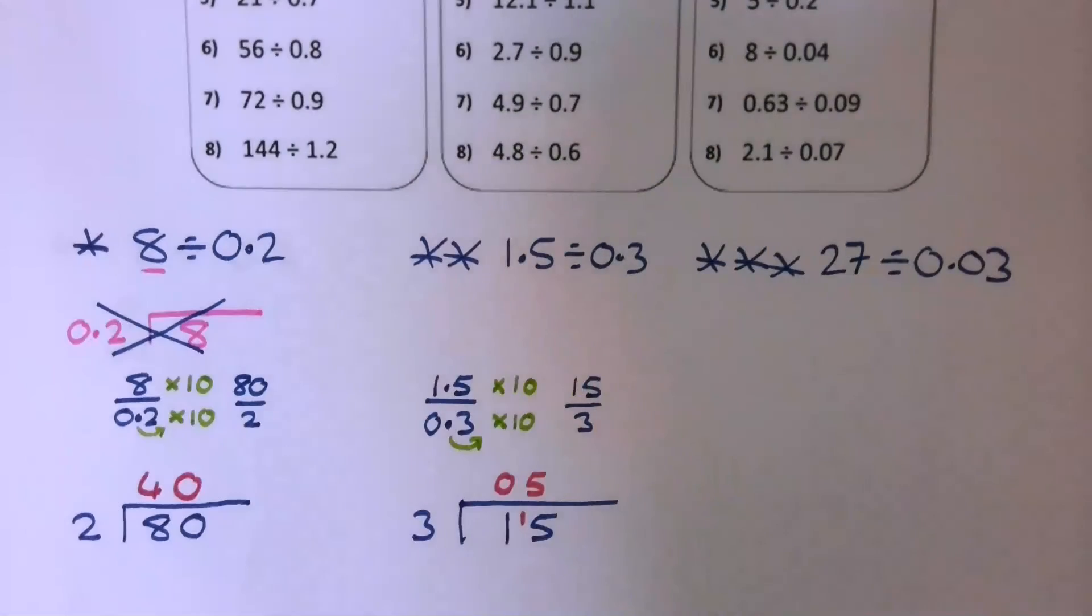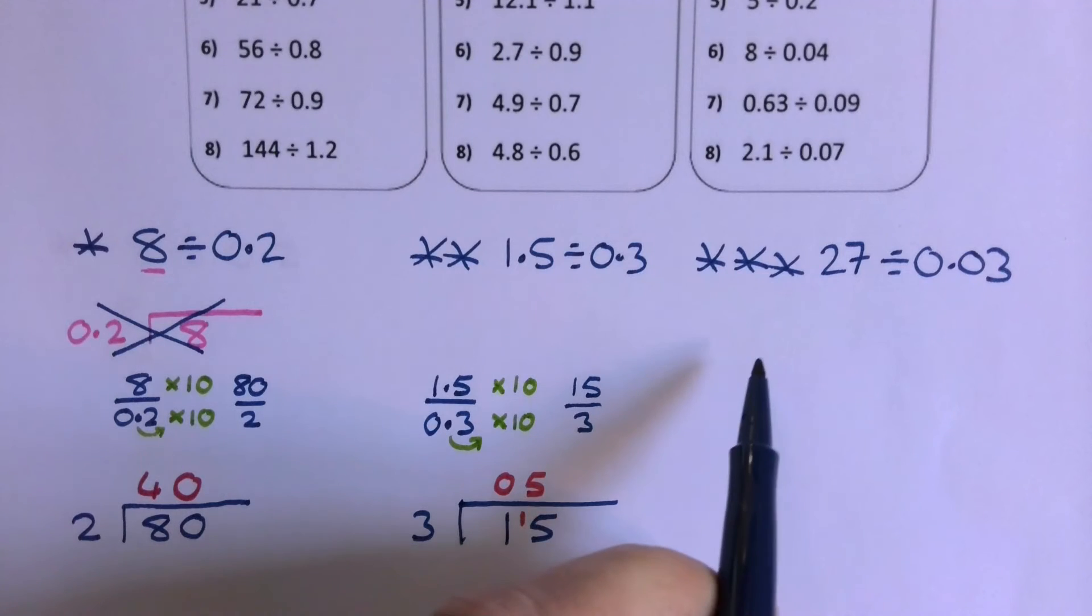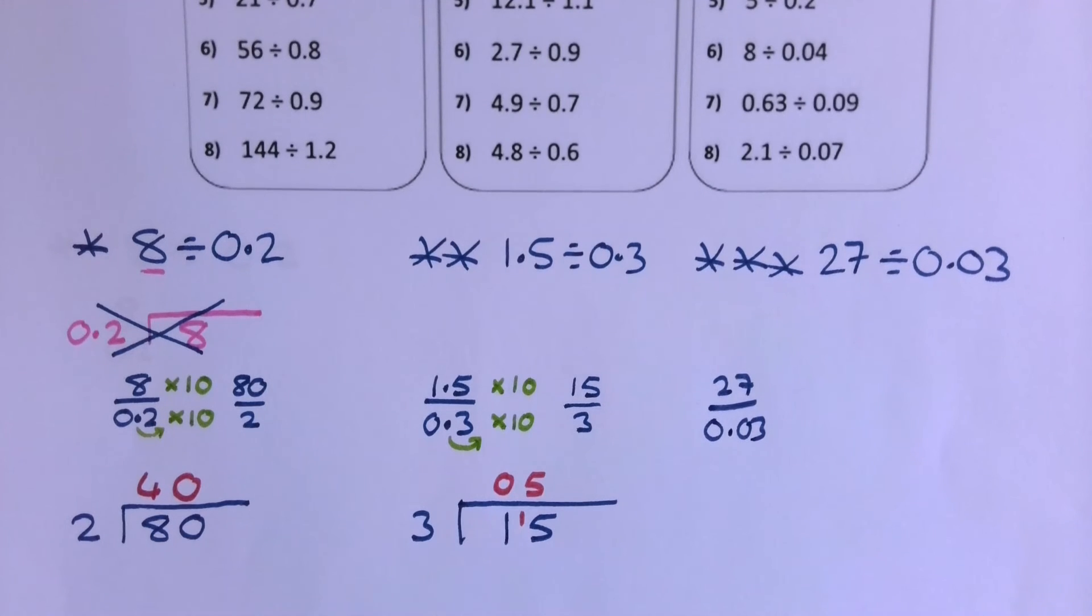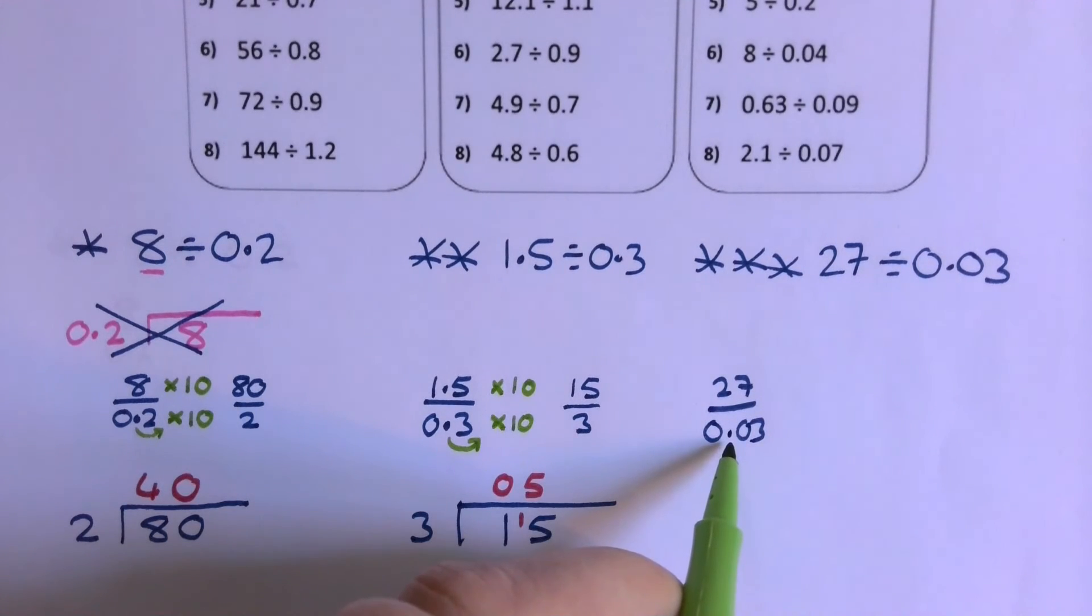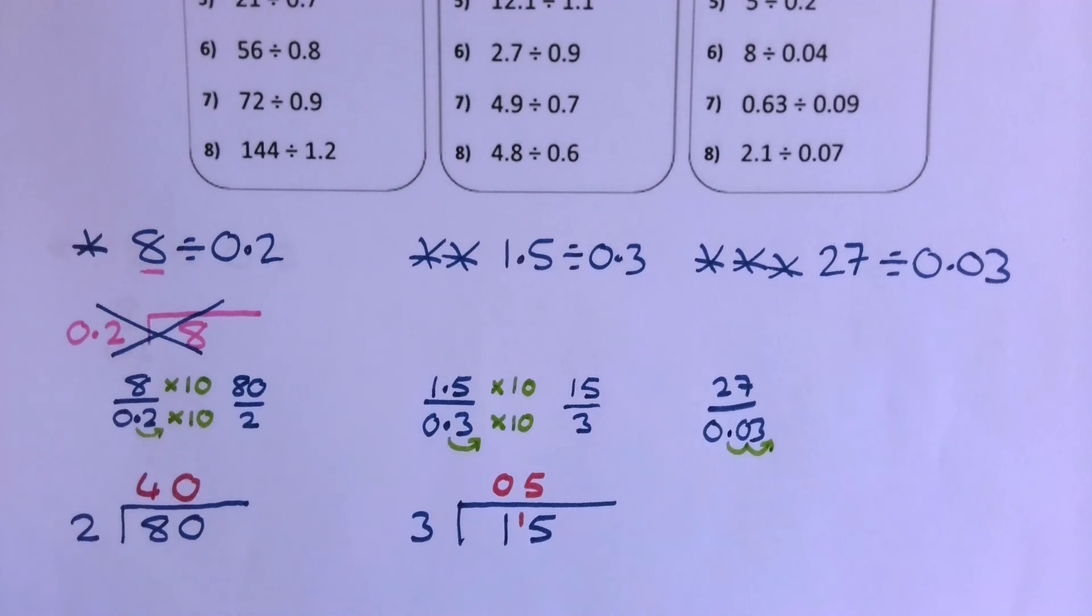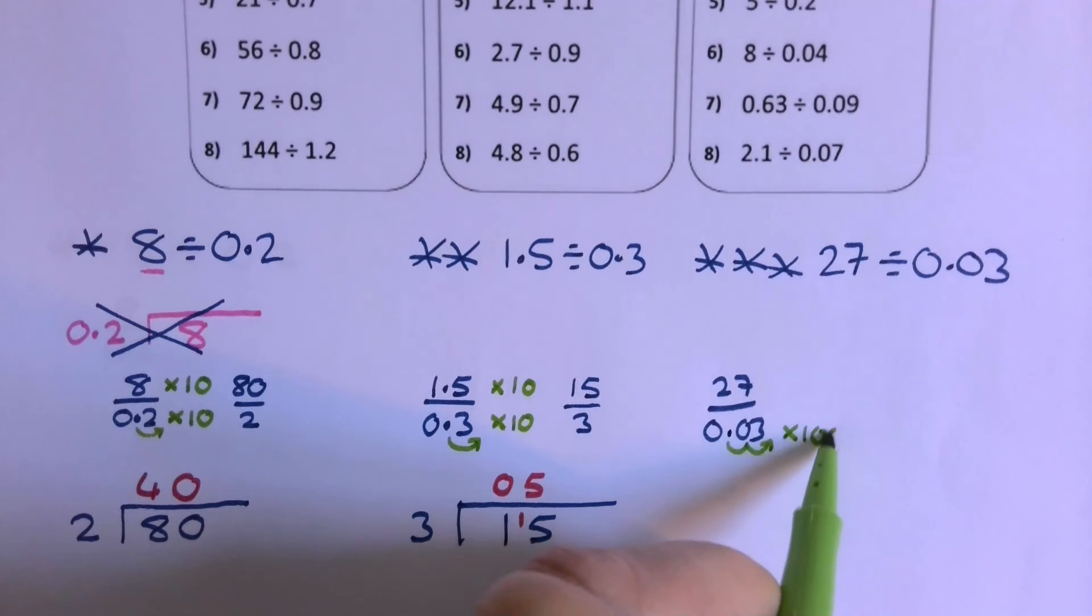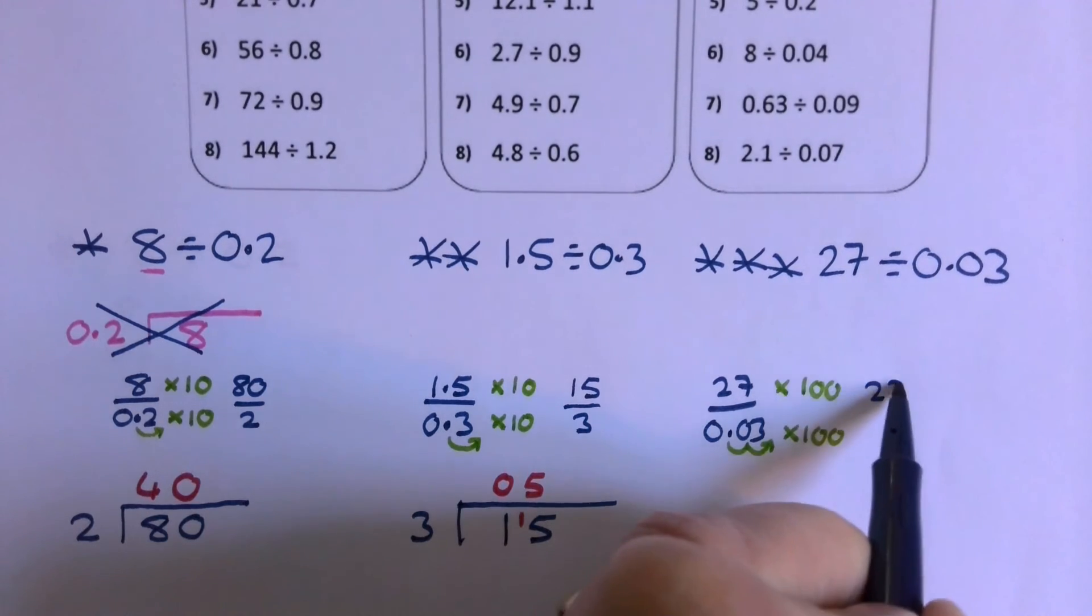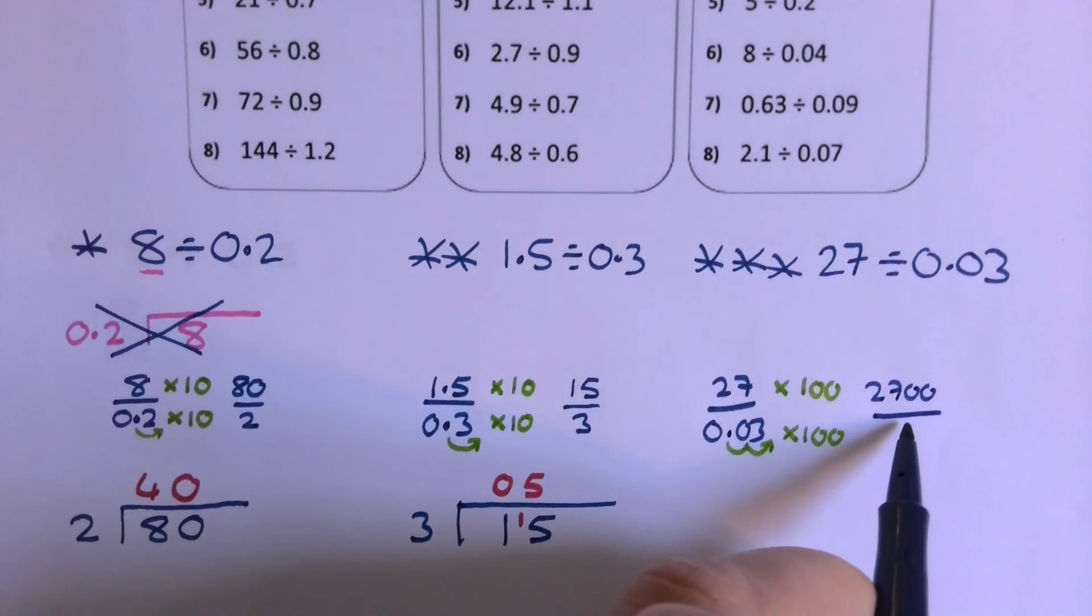So next one then. What we've got here is I've got the 27 as a fraction with 0.03. Now, we don't want that decimal on the bottom, that's what's going to mess us up when we try and do our times tables for the division. So in order to make that a nice number, I'm going to want to multiply that by 100. Now, because I want this to be an equivalent fraction, what I do to the bottom, I do to the top, so that's going to give me 2,700 over 3.